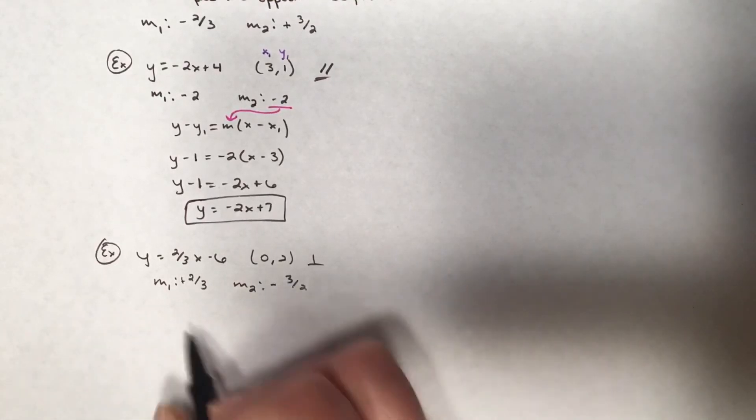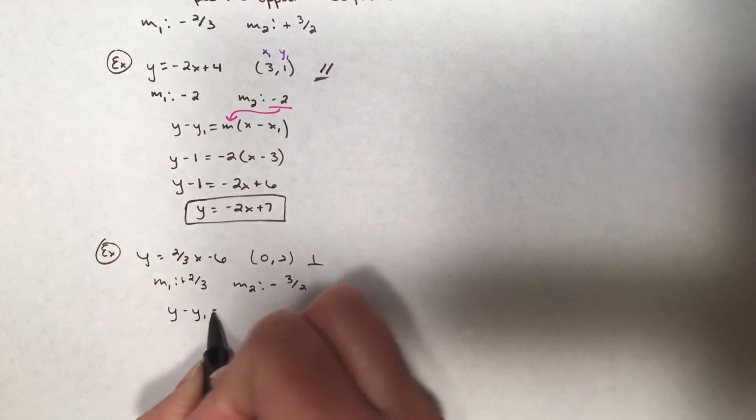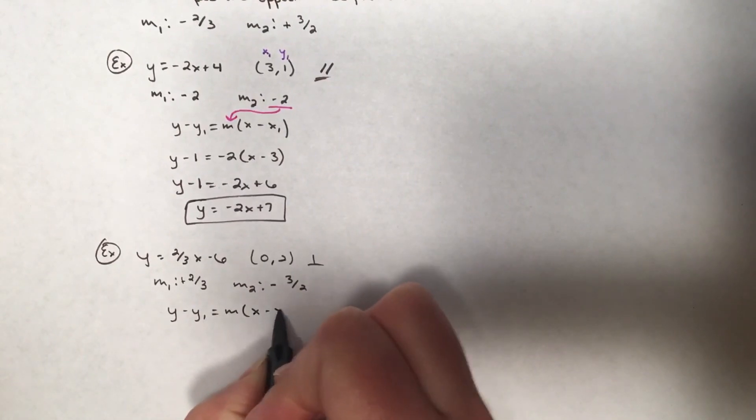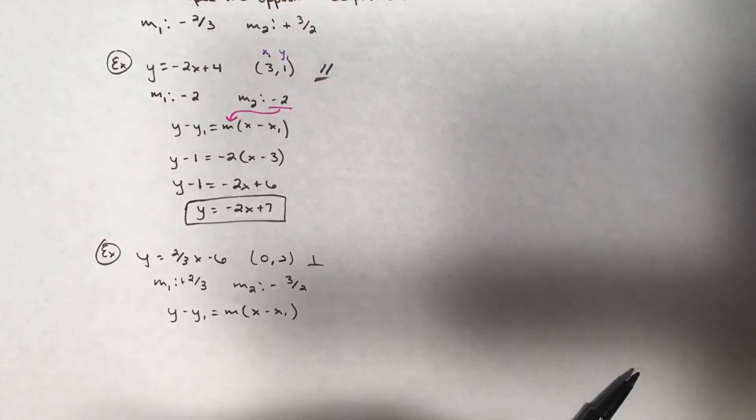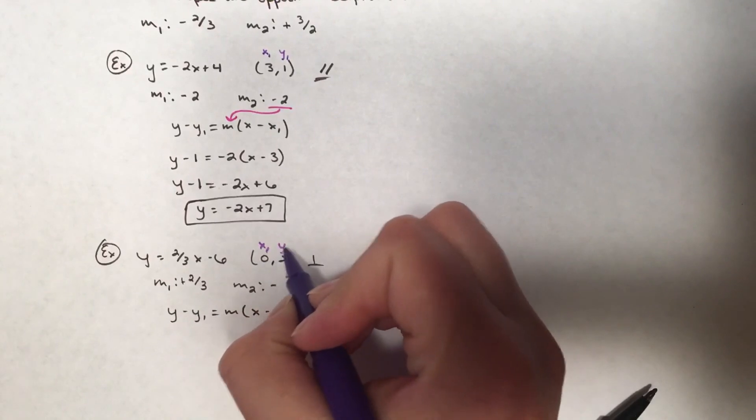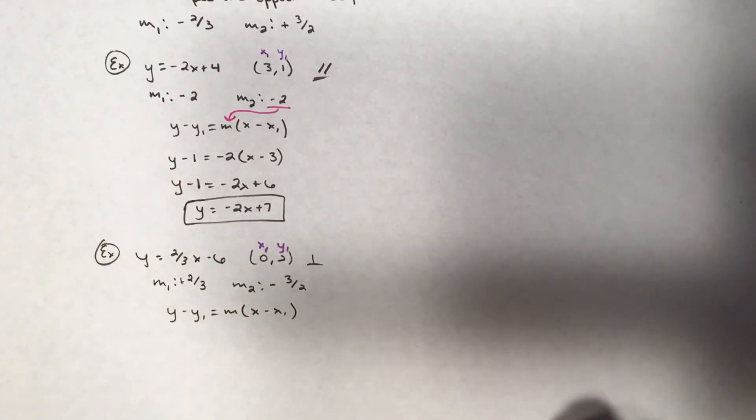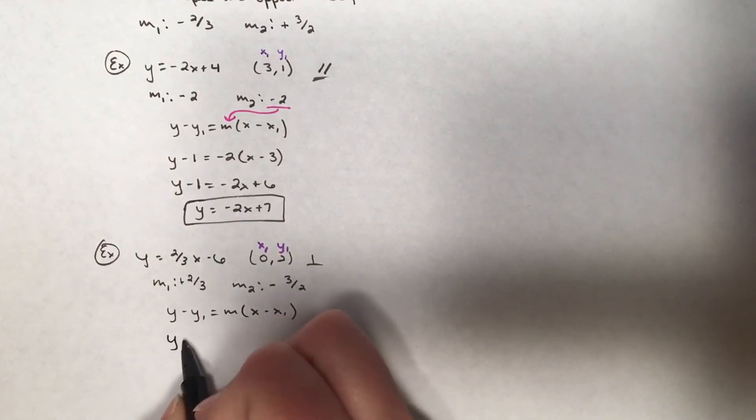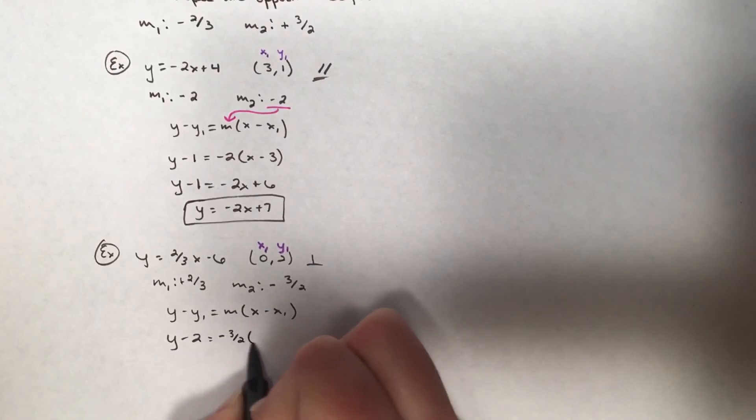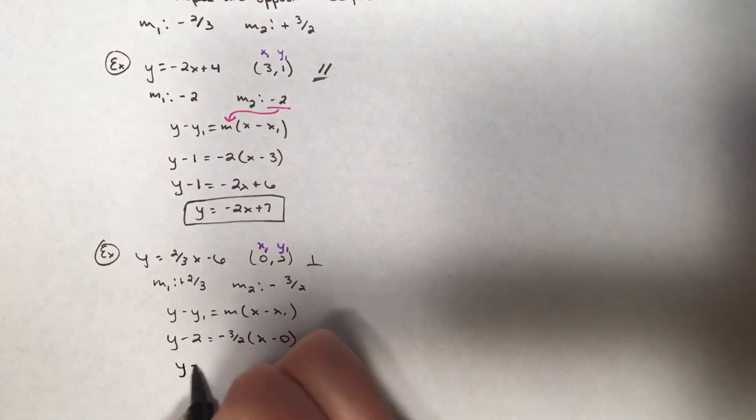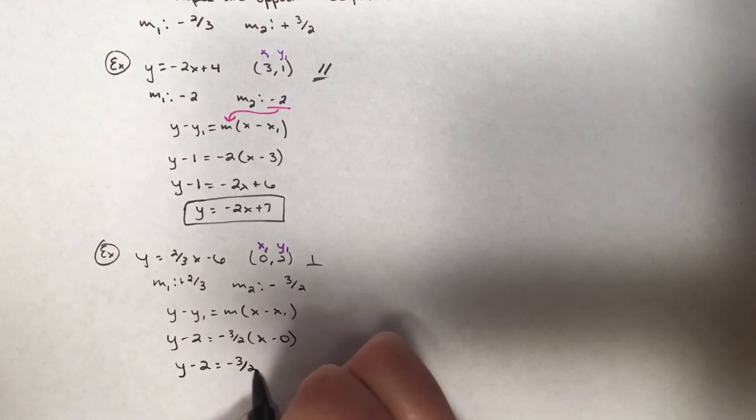Substituting it right into that equation and then distributing, I now have y minus 2 equals negative three over two times x minus 0. Distribute that negative three halves...